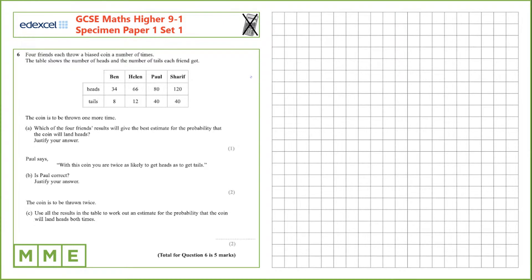Question 6. Four friends each throw a biased coin a number of times. The table shows the number of heads and the number of tails that each friend got.